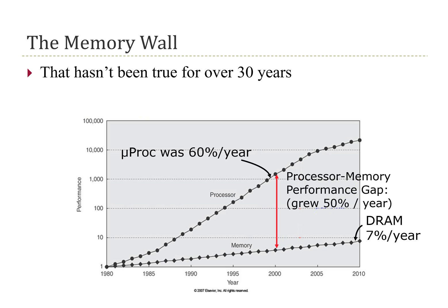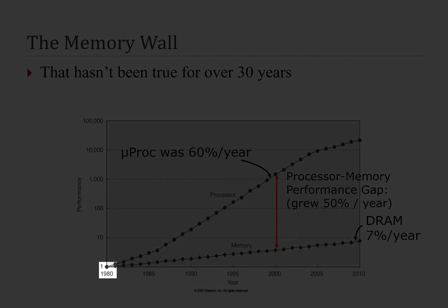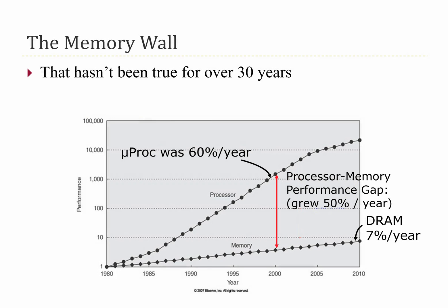You can see that while processor performance has grown exponentially, memory performance has grown much slower. So while back in 1980 memory and processors might have had similar performance, these days there is a very large gap between the speed or performance of a microprocessor and the speed of memory.